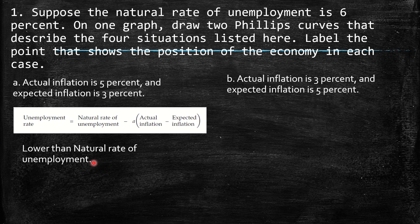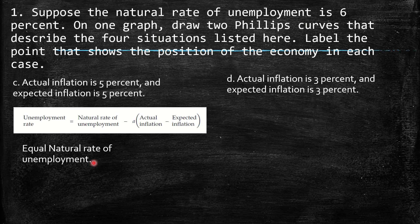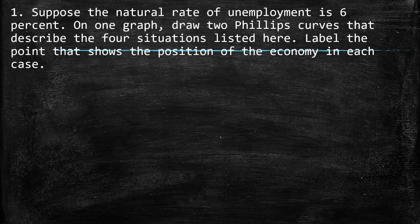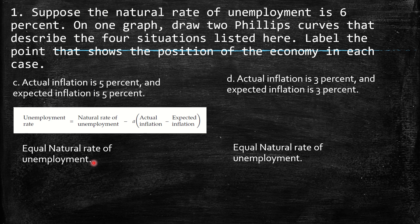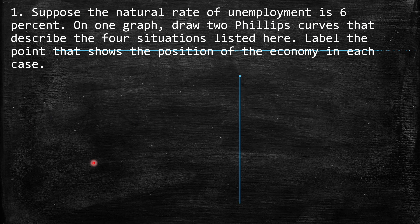B: actual inflation is 3% and expected inflation is 5%. Then it's the opposite — higher than the natural rate of unemployment. C: actual inflation is 5% and expected inflation is 5%, so the gap is zero, and the unemployment rate is exactly equal to the natural rate of unemployment. And the other case D is exactly the same, just for 3%.